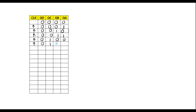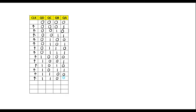Next it will be 0101, that is 5. Next we have 6, that is 0110. Next we have 7: 0111. Next we have 1000, and in the next clock pulse 1001, then 1010, 1011, 1100, 1101, 1110, and 1111. In the next clock pulse it will go back to 0 — that is, it will start counting from 0 again.